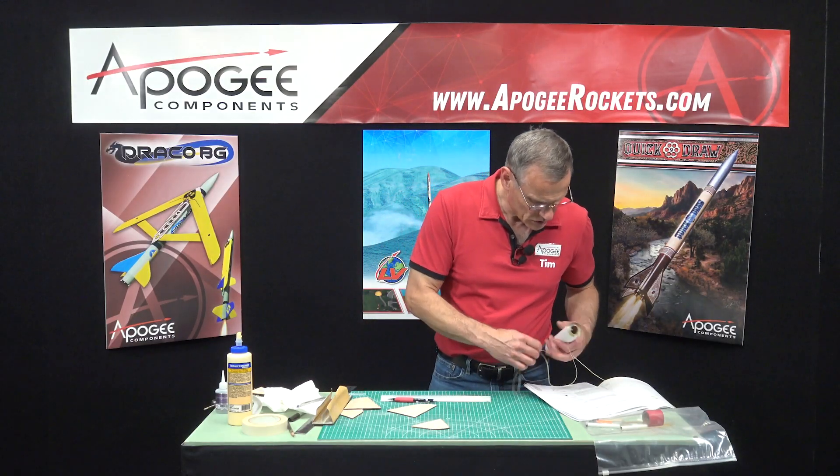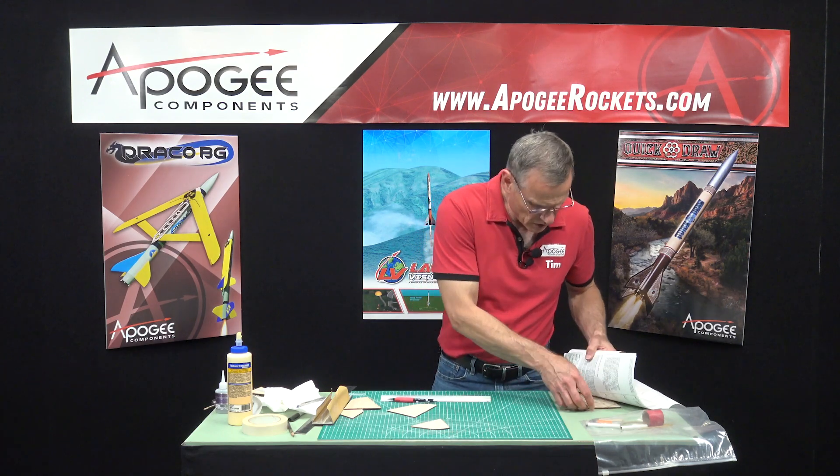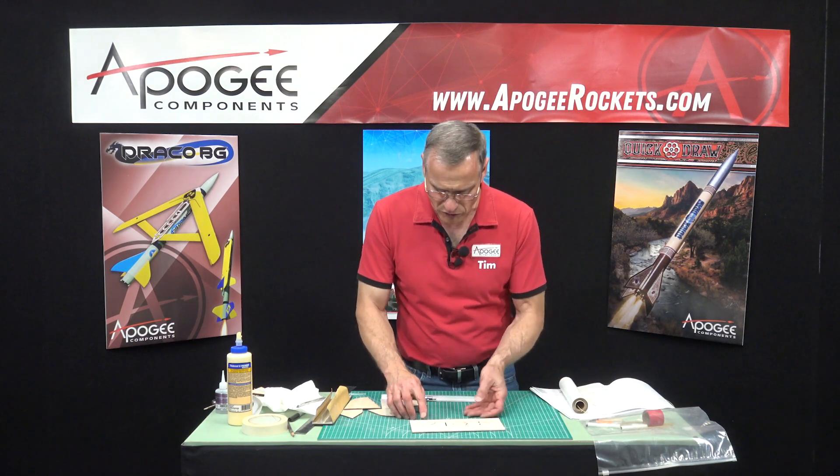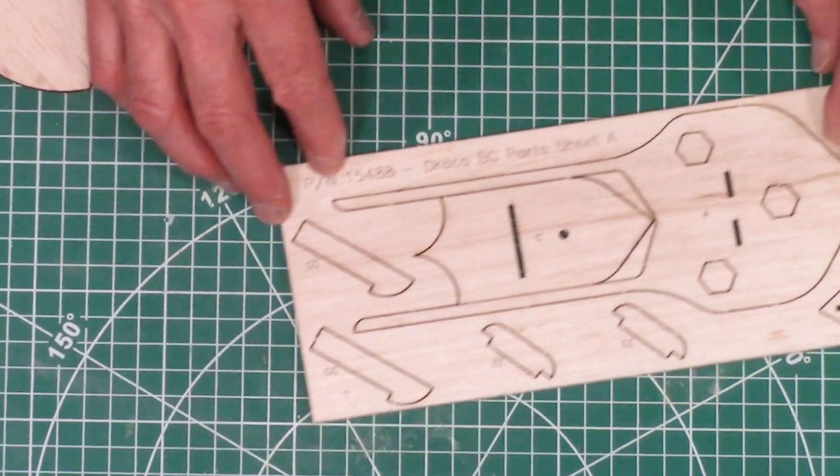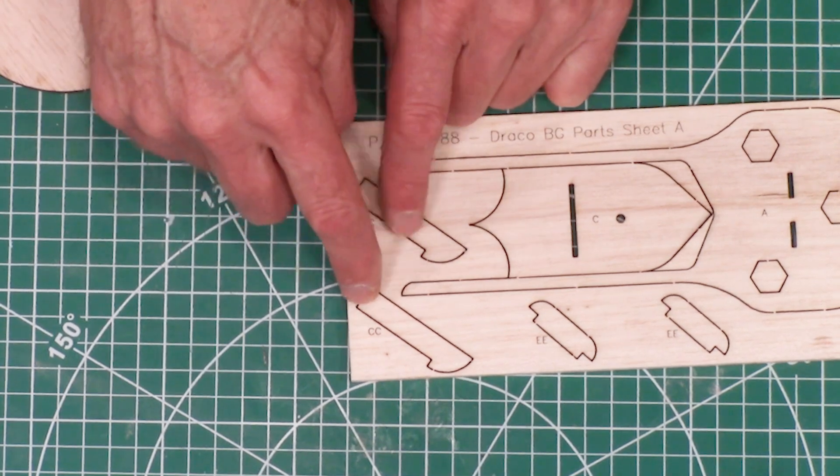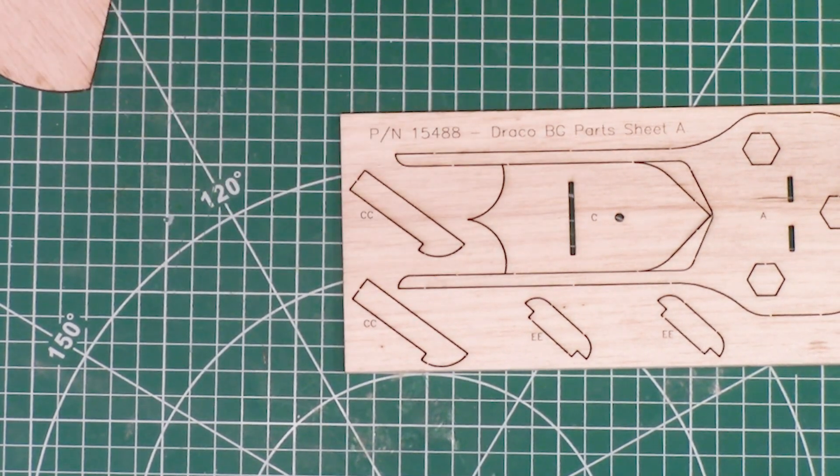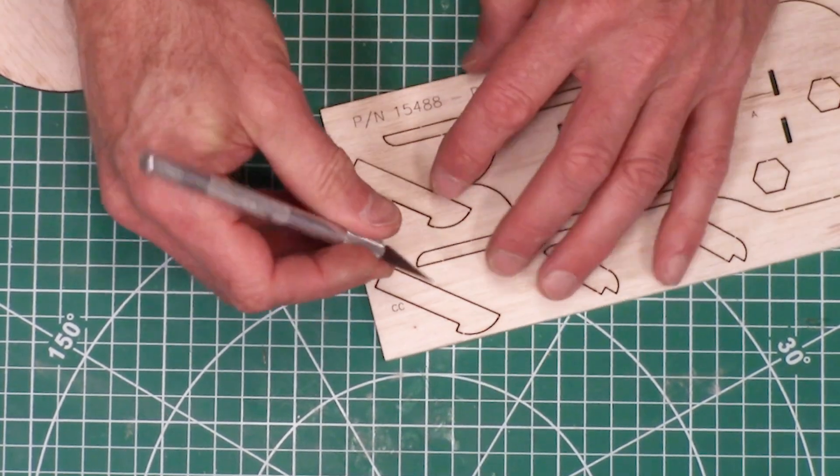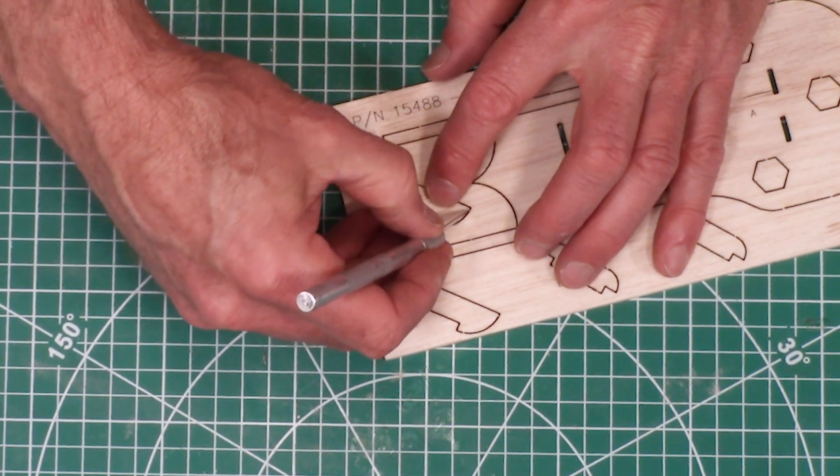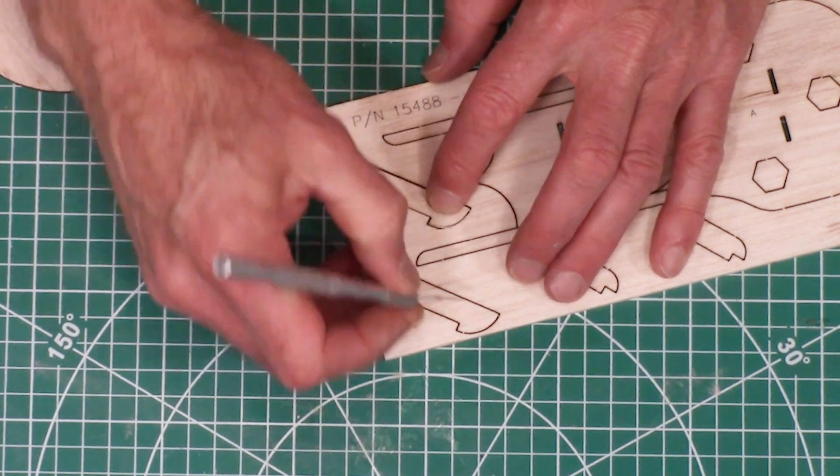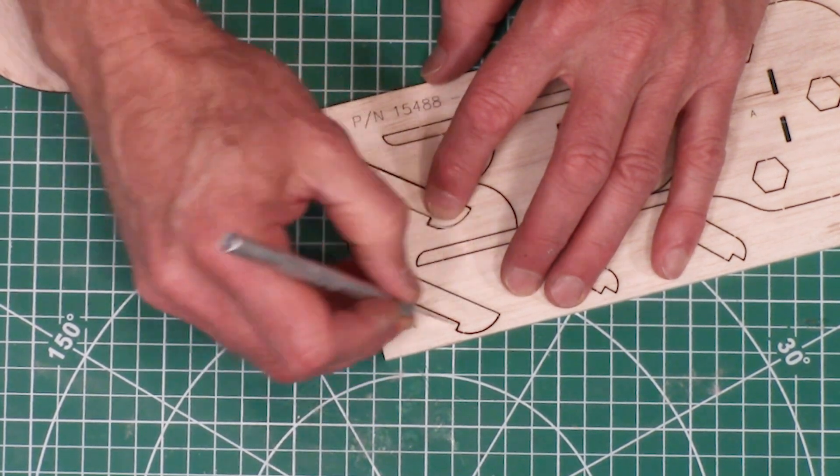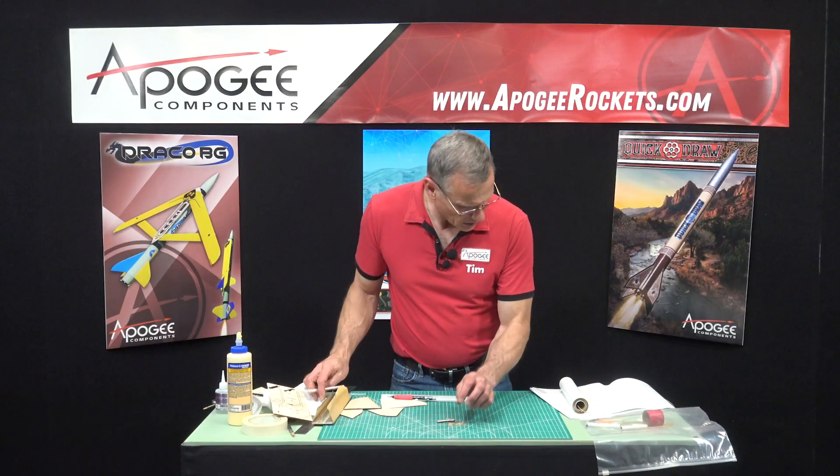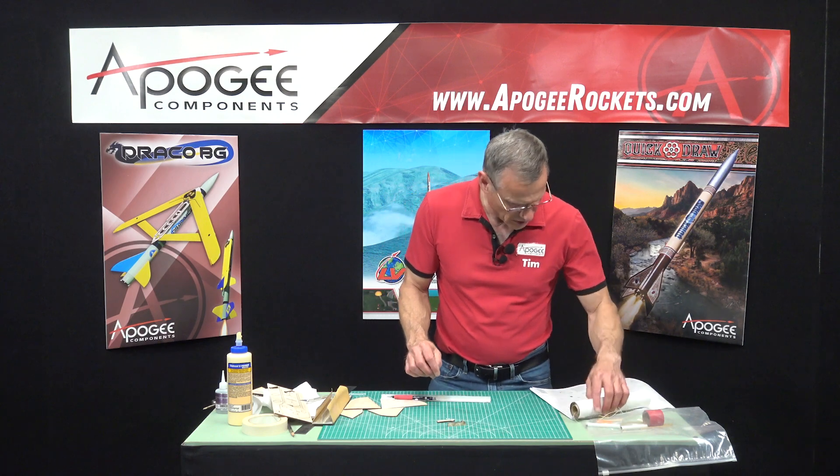Now we also need from the other sheet of wood, and this is part number 15488, we need these two CC parts. They're labeled CC, so we'll pop those out of the wood.